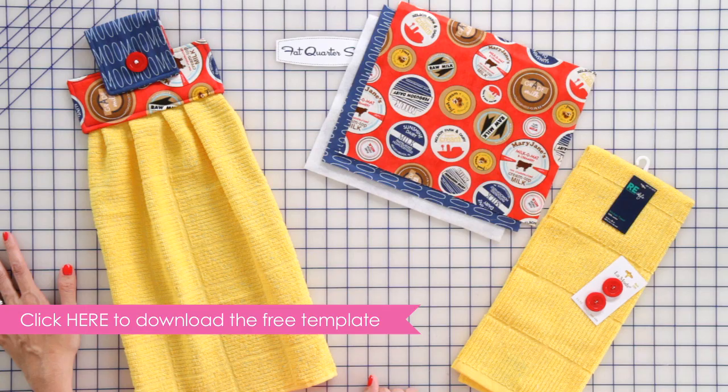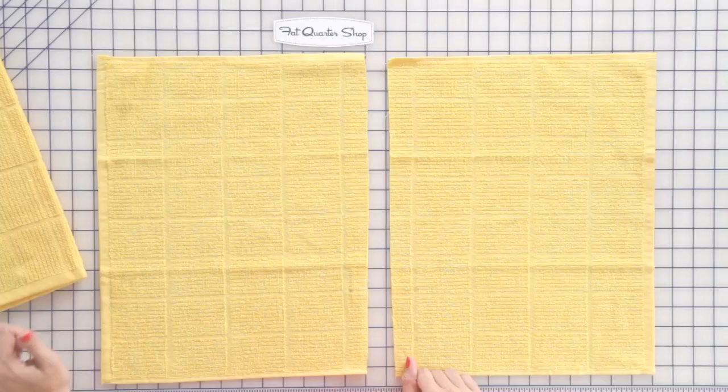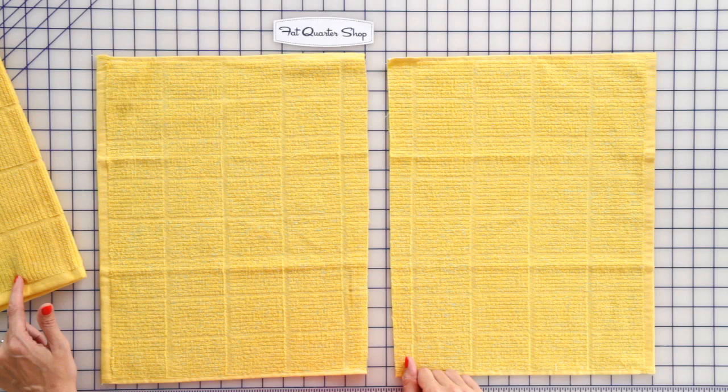All you need is a kitchen towel, two fabrics, and a piece of batting that are 9 by 12 inches and a 1 inch button.